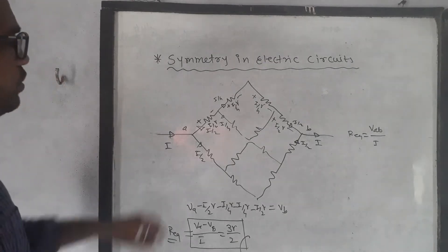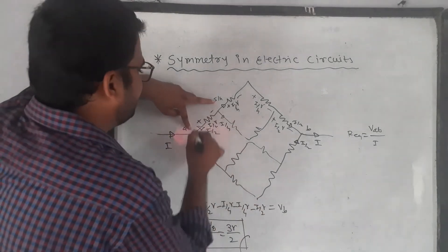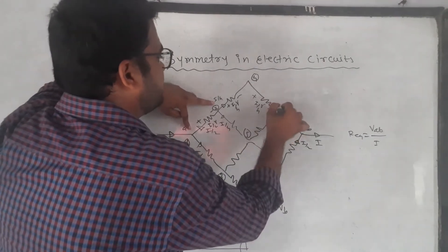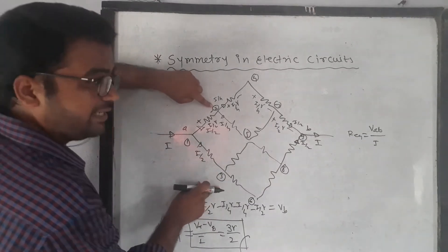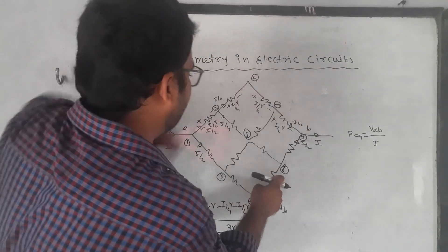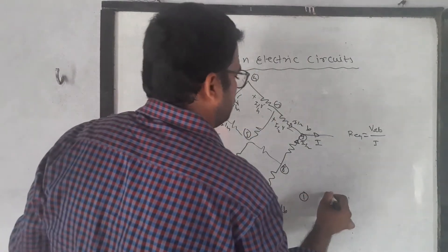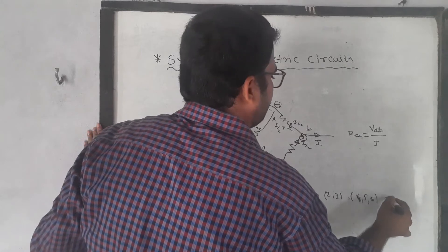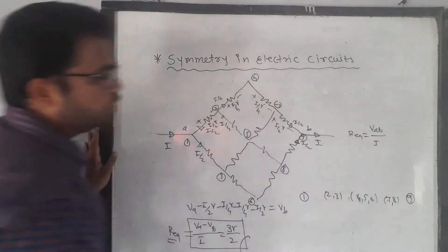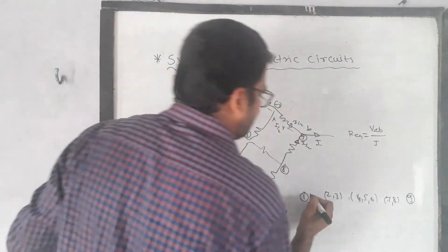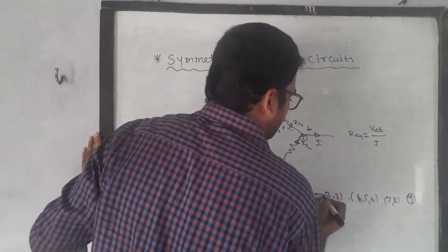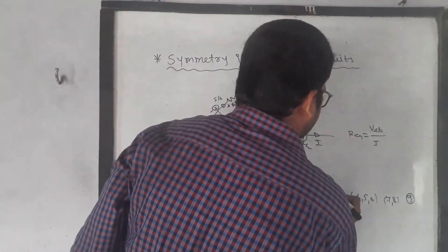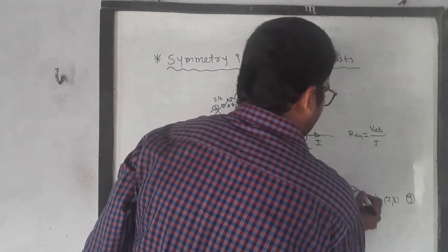The last rule uses node numbering. Label the nodes 1 through 9. Nodes 2 and 3 are equipotential; nodes 4, 5, and 6 are equipotential; nodes 7 and 8 are equipotential; and node 9 is the final point. Between node 1 and layer {2,3} there are 2 resistances in parallel. Between layer {2,3} and layer {4,5,6} there are 4 resistances in parallel.